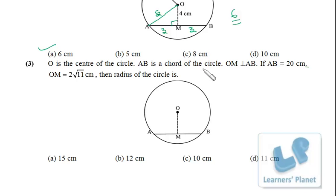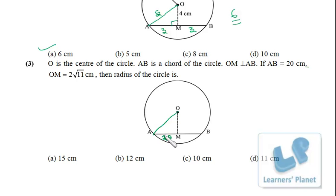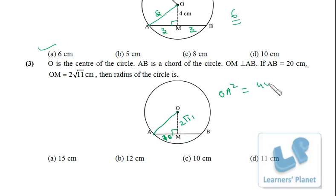Next: O is the center of the circle. AB is a chord with OM perpendicular to AB. If AB equals 20 and OM equals 2√11, find the radius. Since OM is the perpendicular from the center, it bisects the chord, so AM equals 10. In right triangle OAM: OA² = OM² + AM² = (2√11)² + 10² = 44 + 100 = 144. So OA = 12. The radius of the circle is 12 cm.